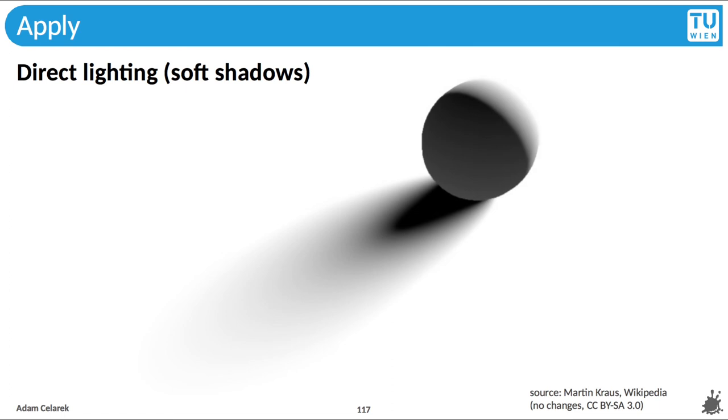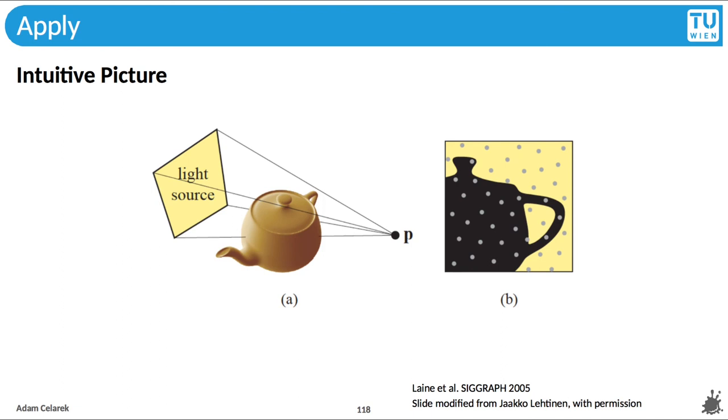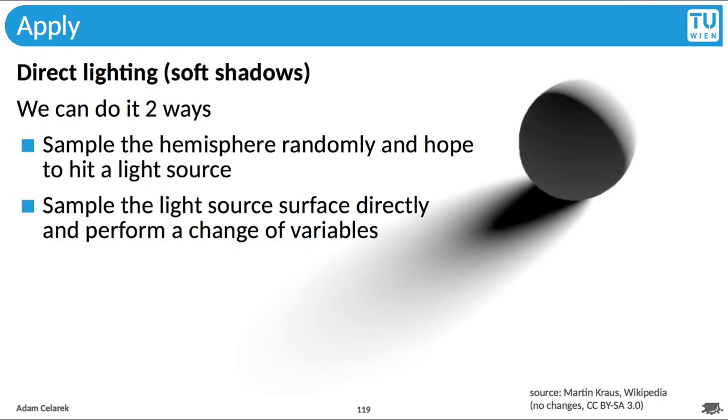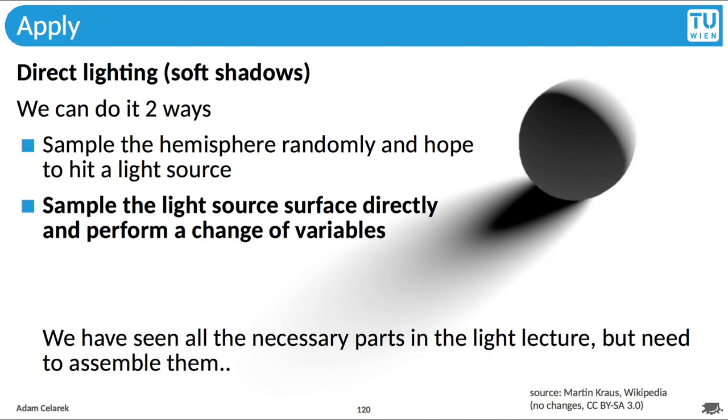Let's now look at direct lighting, or in other words, how to compute soft shadows. Basically, what that does is computing the percentage of visible light for every surface point visible in the camera. It's not that different from the ambient occlusion case, just that we aim for light sources to the surface instead of the whole world. We can do that in two ways, either sampling the whole hemisphere, or perform a change of variables and sample the light source surface. In the assignments, you can implement both ways. The first way is quite similar to ambient occlusion code-wise, so we'll skip it. For the second way, we have seen all the necessary parts in the lecture about light, but we still need to assemble them.